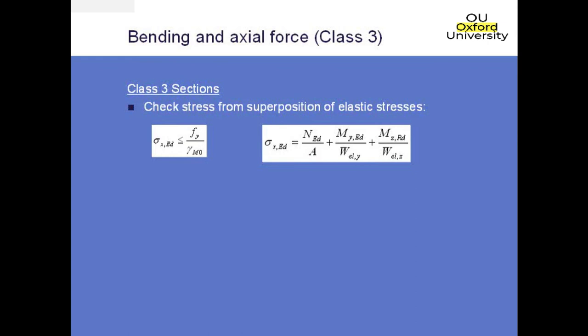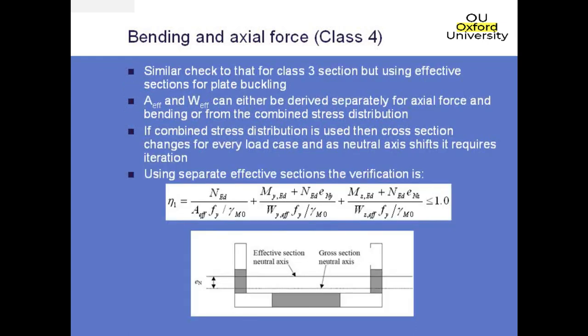If you've got a class 4 cross section, these are treated in a very similar way to class 3 sections, but you use the effective section for the plate buckling. Your effective area and section modulus can be derived separately for axial force and bending, or they can be derived from the combined stress distribution. If you are deriving from the combined stress distribution, it will typically not be very practical as it will require recalculation of the section properties for every different load case. It could potentially give you some increase in economy because it gives more accurate answers, and if you've got a spreadsheet it may not be that difficult to do.